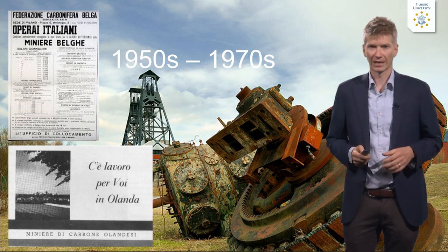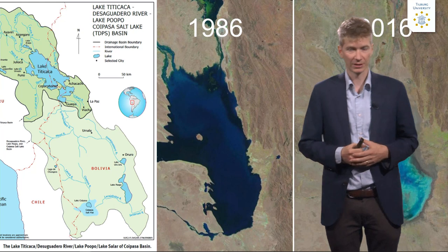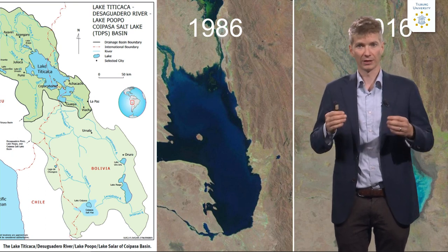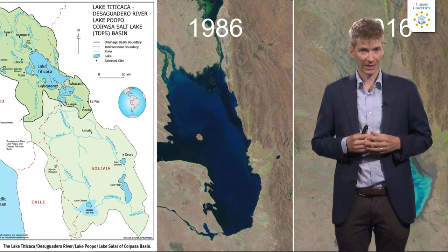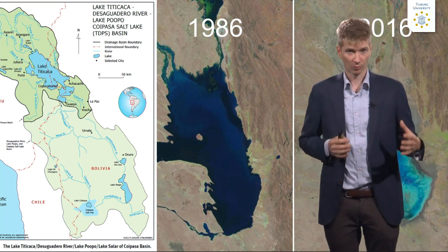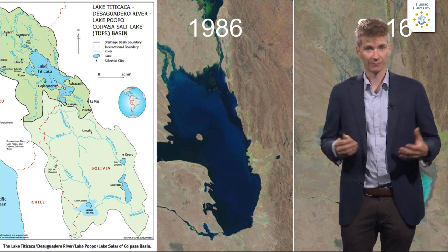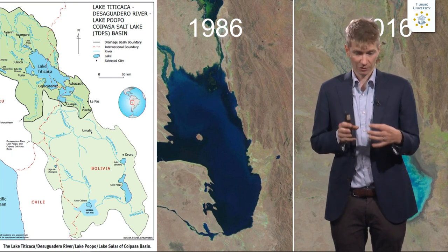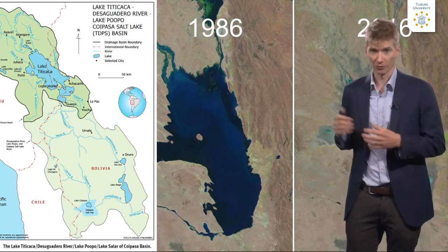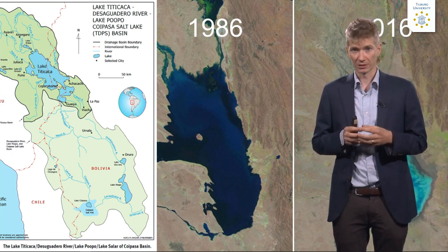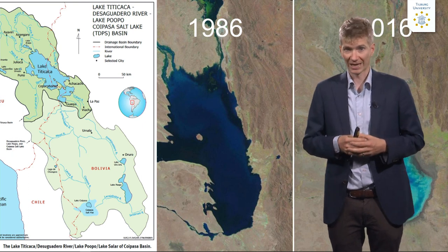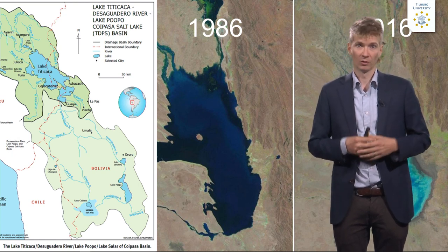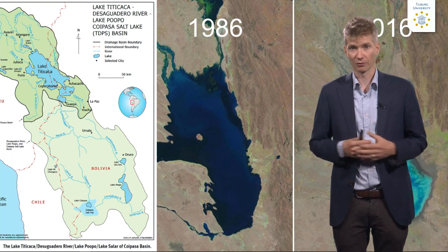There are other examples we can think about here. As you can see on this picture, we see two different images of Lake Popu in Bolivia. In 1986, as you can see, the lake was still quite large. But due to climate change, the lake has been shrinking over the past years until it reached a very small state, as you can see in the other picture. All the fishermen communities that were living on the shores and living from catching fish were not able to survive, which meant that many people moved away from Lake Popu and found work in cities to survive.